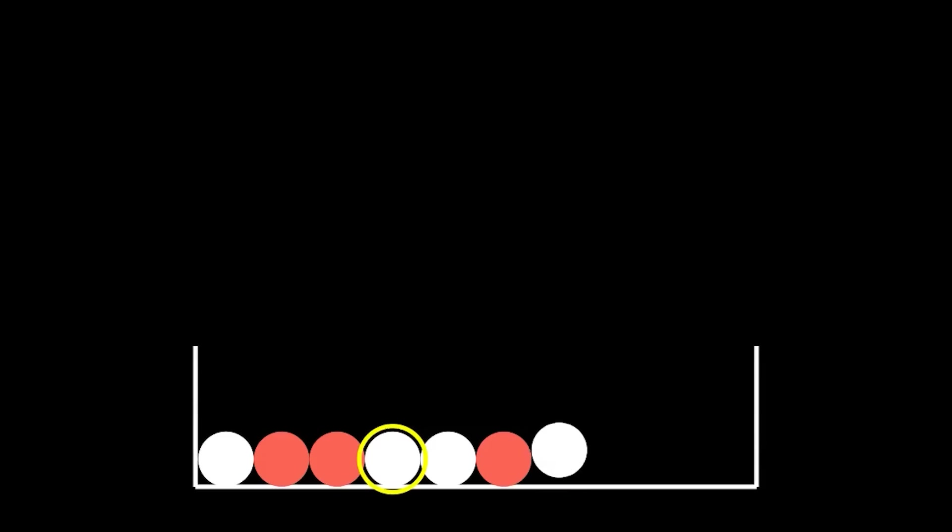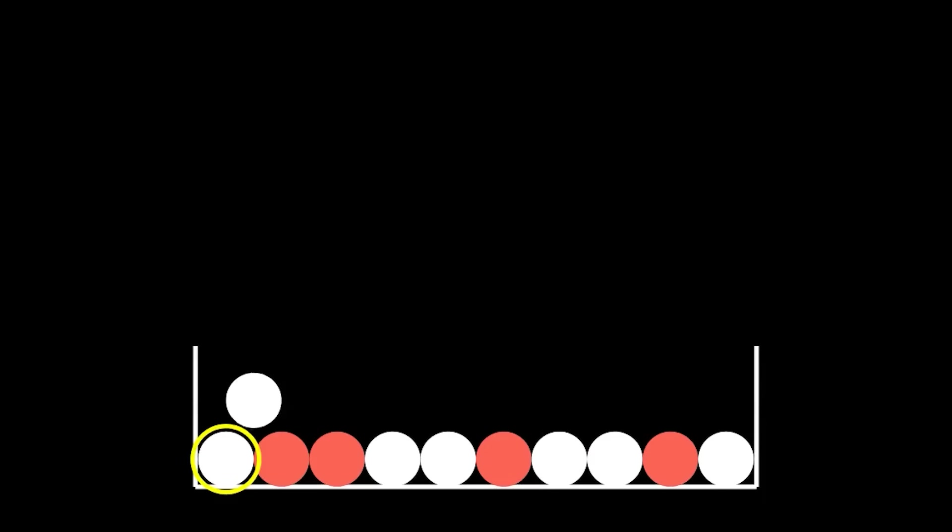And now the algorithm is going to be even more likely to show you similar content. One simple model for this kind of reinforcement is given by something called Polya's Urn.